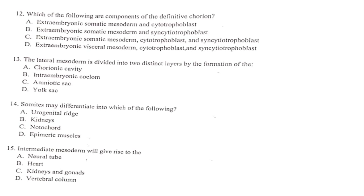The next question: which of the following are components of the definitive chorion? The definitive chorion has the cytotrophoblasts, the syncytial trophoblasts, and the extra-embryonic mesoderm. The extra-embryonic mesoderm is divided into somatic and visceral, but the definitive chorion has the somatic extra-embryonic mesoderm. So the answer is simply C.